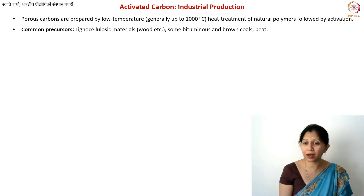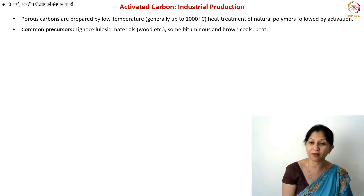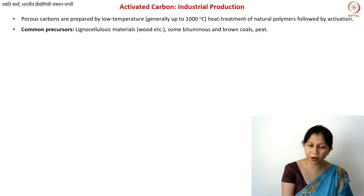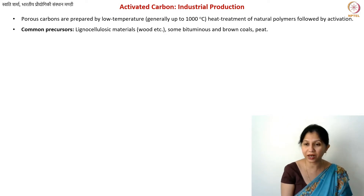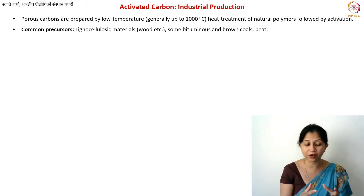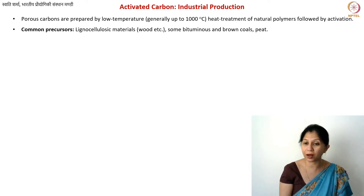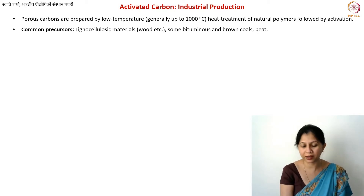First of all, when we make any kind of carbon, we need to know what are the suitable precursors for it. As I have mentioned multiple times, activated carbons are derived from natural polymers in most cases. For example, wood, which is a lignocellulosic material — lignocellulosic means the structure is made of cellulose, but it also contains a lot of lignins. Lignin is a range of oily compounds found in wood and natural agricultural waste materials.